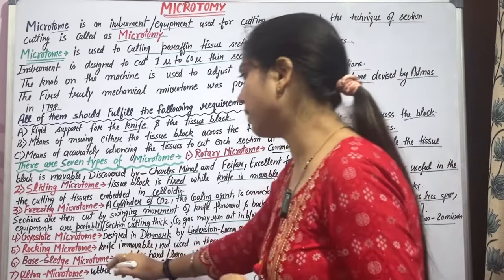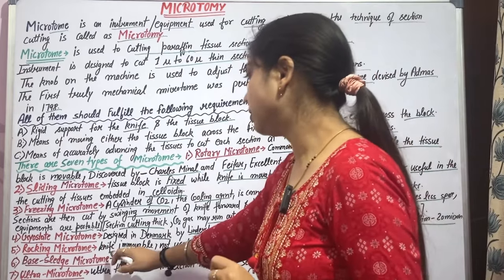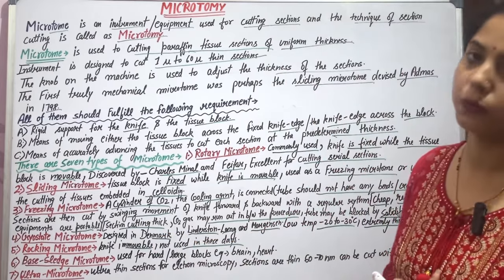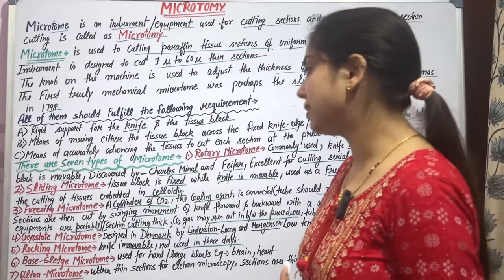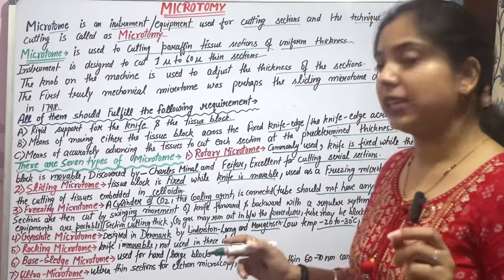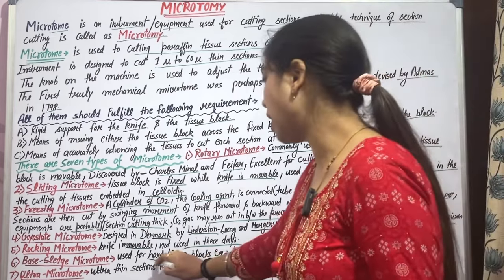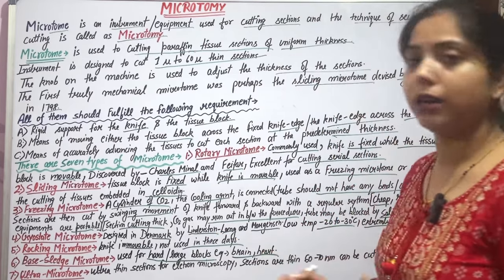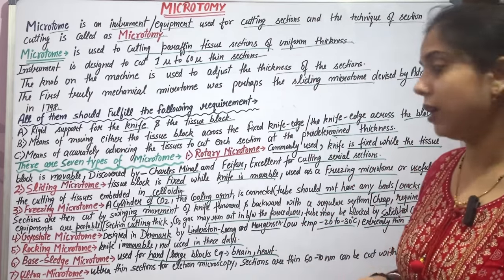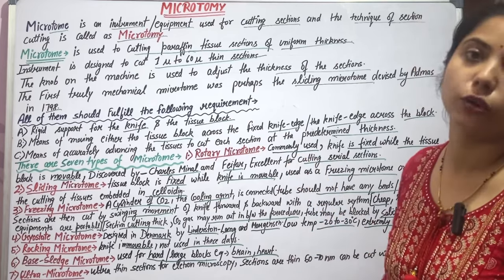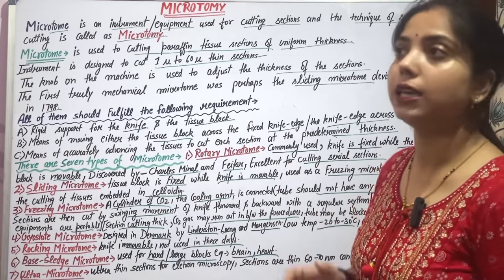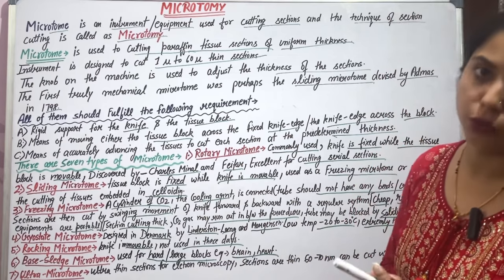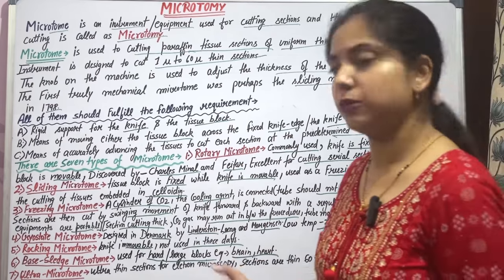Regarding the rocking microtome, the knife is immovable and it is not commonly used these days. The base sledge microtome is used for hard and large blocks such as brain and heart tissue. It is specifically used for cutting these large tissue blocks.